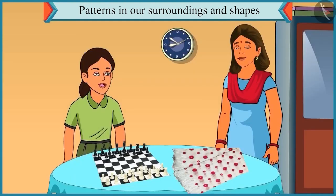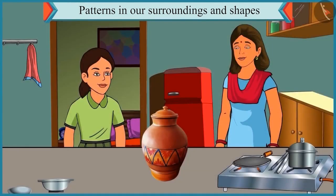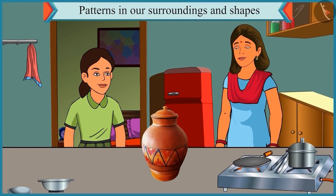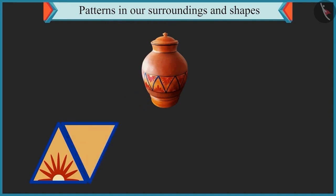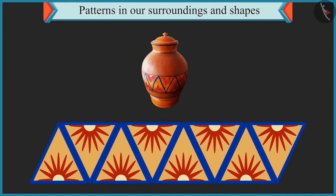Oh yes, you are right. Chutki, come on, now let's go to the kitchen. Now look. A pattern is made using triangles on this pot of water. Oh yes. Look carefully. Here in this pot, a triangle is made with a flower in it. This is followed by an upside-down triangle that again has a flower in it. And this pattern is repeated again and again.